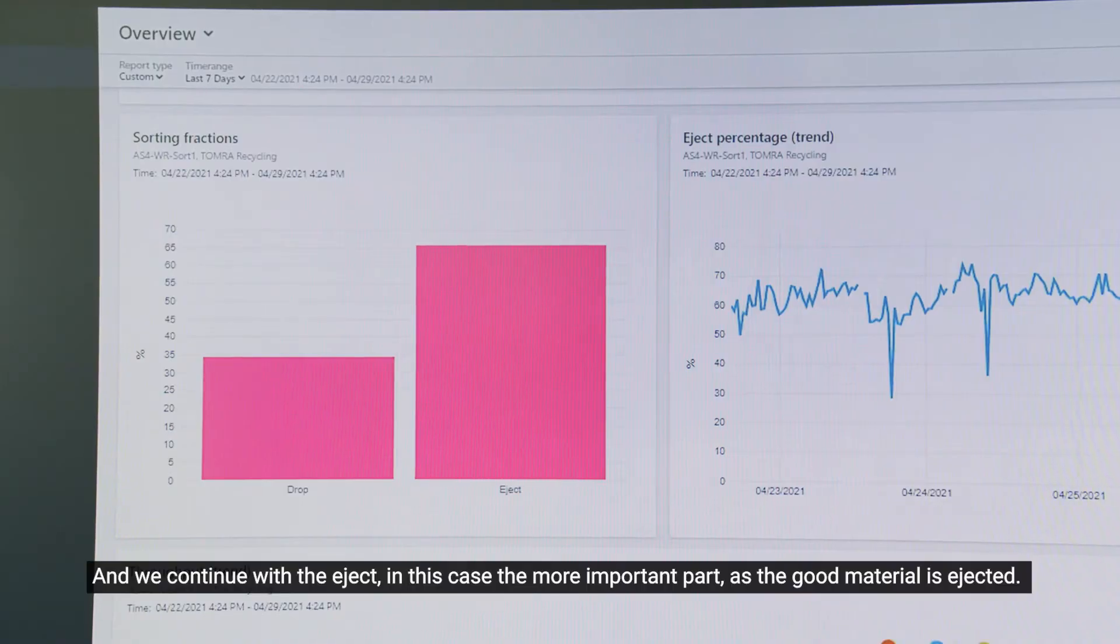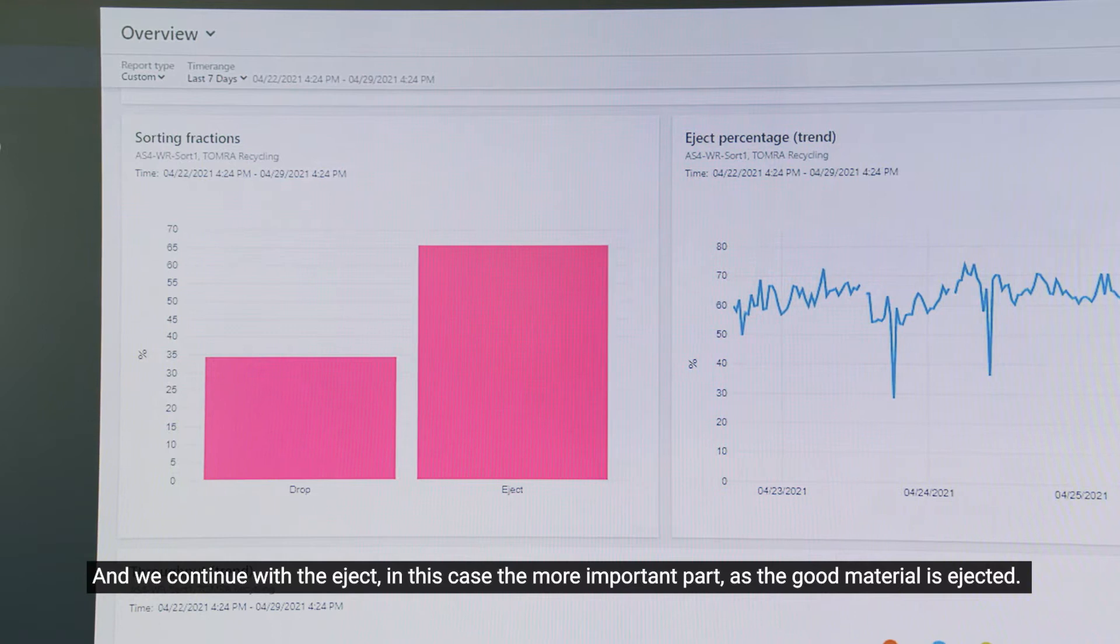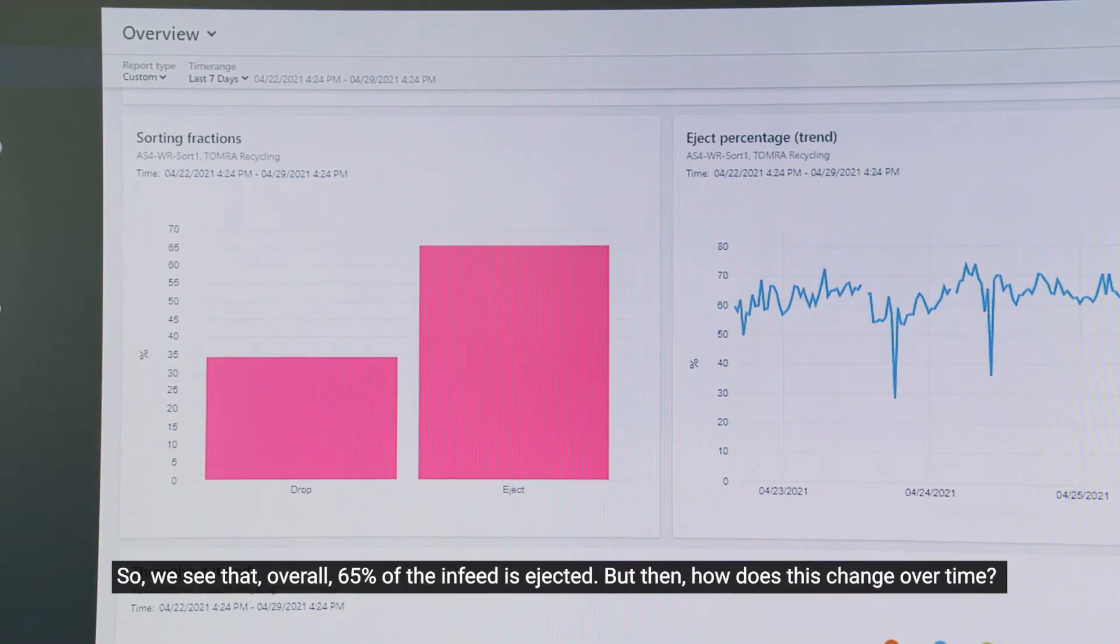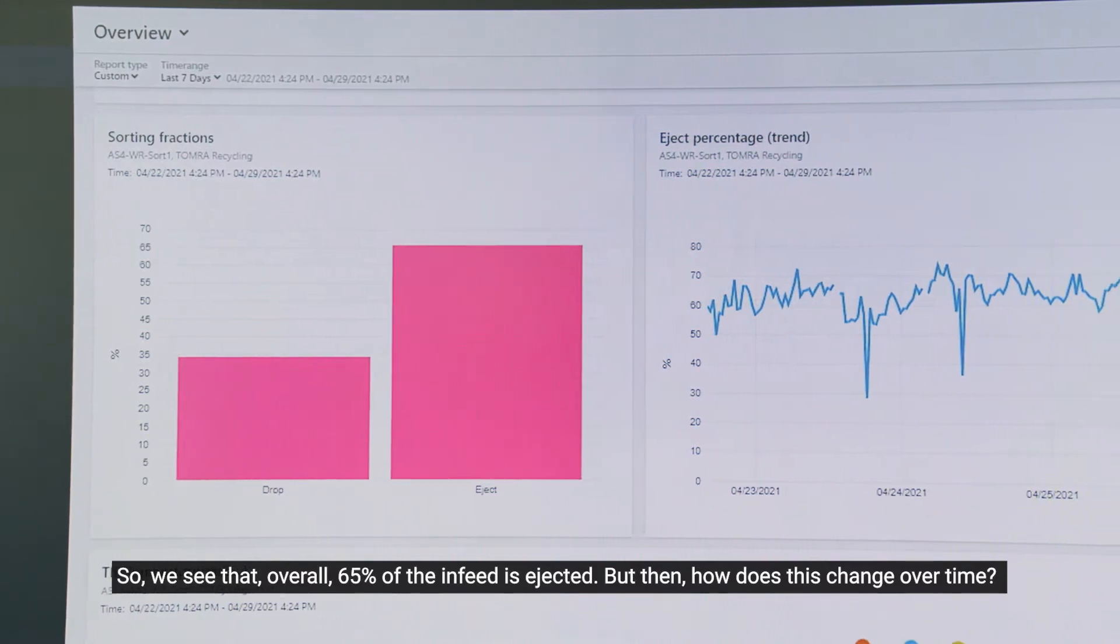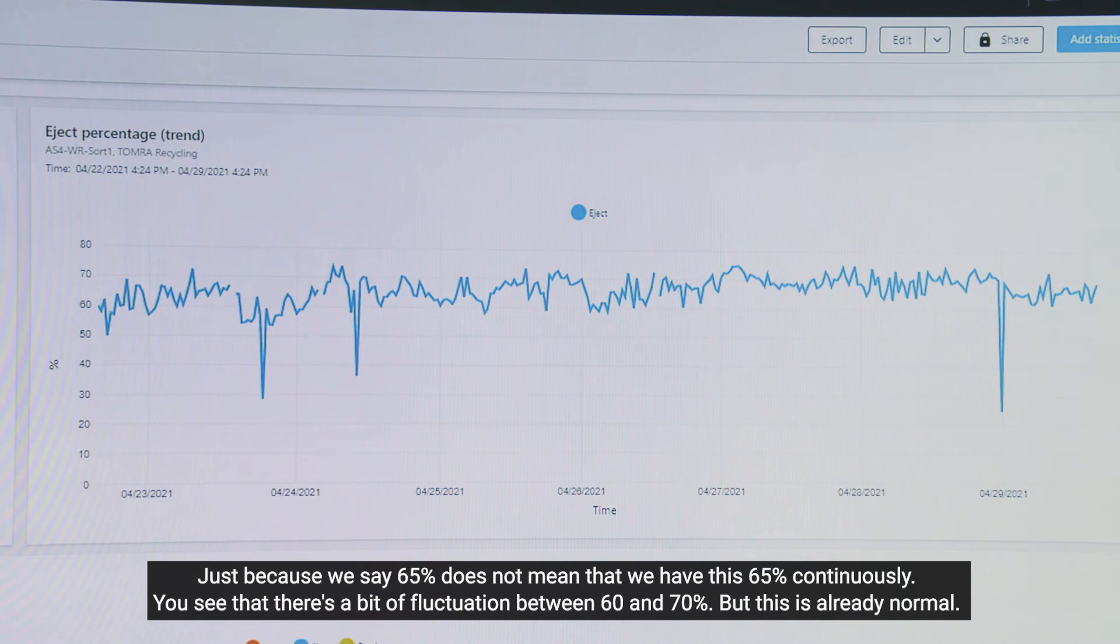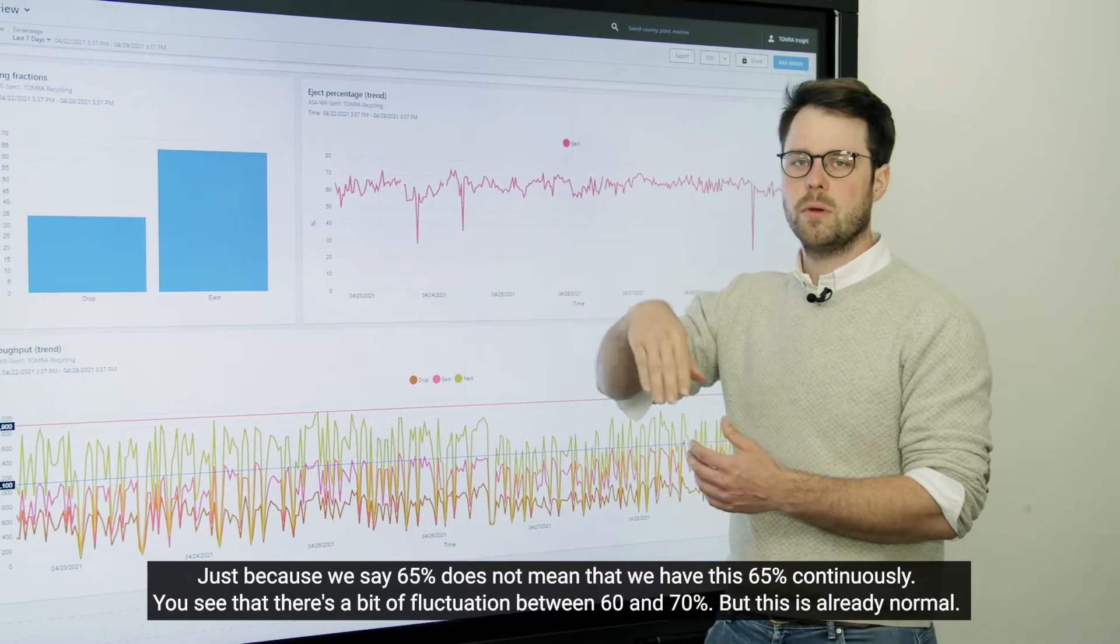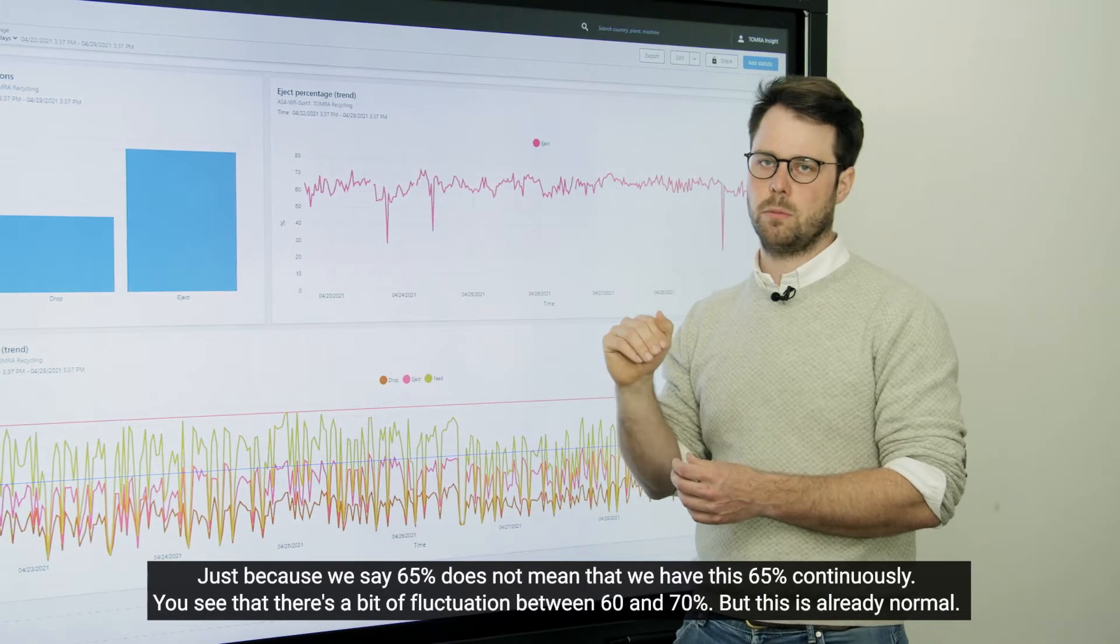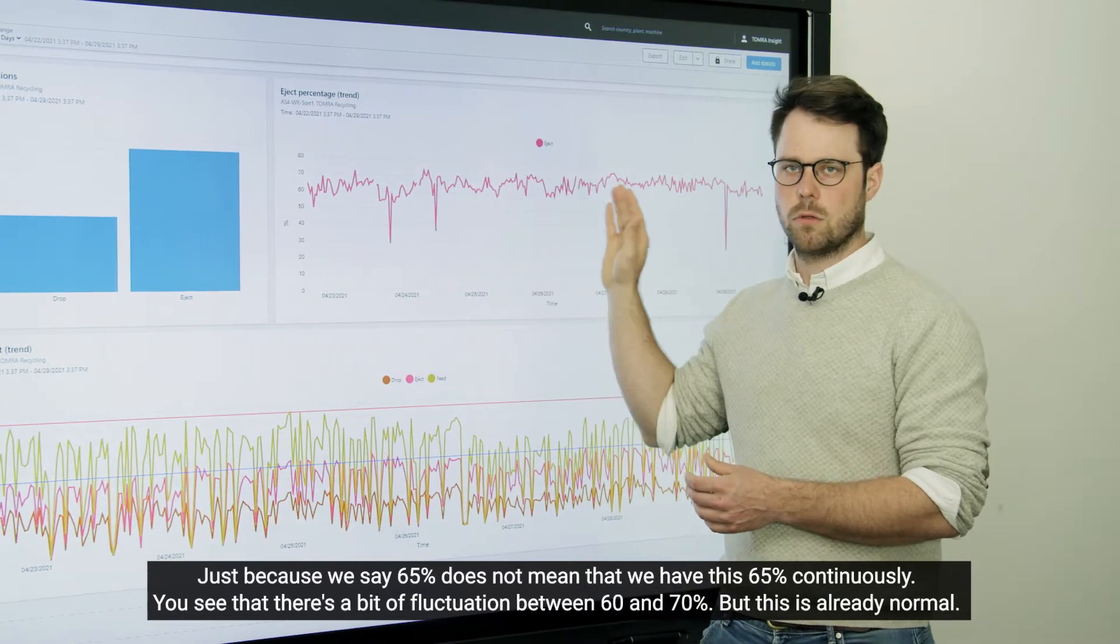And we continue with the eject, in this case the more important part—the good material is ejected. So we see that overall 65% of the infeed is ejected. But then how does this change over time? Just because we say that it's 65%, it doesn't mean that we have the 65% continuously. You see that there's a bit of fluctuation between 60% and 70%, but this is already normal.